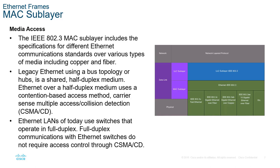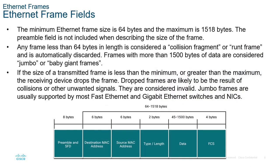With switches, each collision domain is tied per port rather than the entire device. CSMA/CD was very common when hub technology was in place instead of switches. An Ethernet frame is typically between 64 and 1518 bytes. If it is less than 64 bytes it is a runt frame; if larger than 1518 bytes it is a jumbo frame. The overall structure of an Ethernet frame begins with a preamble, followed by the destination MAC address, then the source MAC address, then the type and length of the frame.